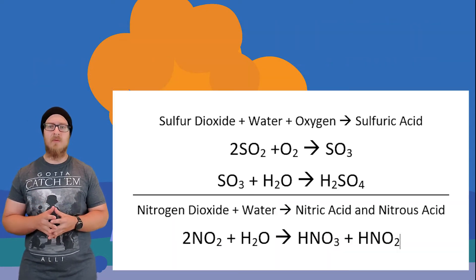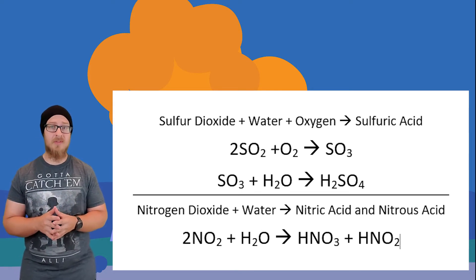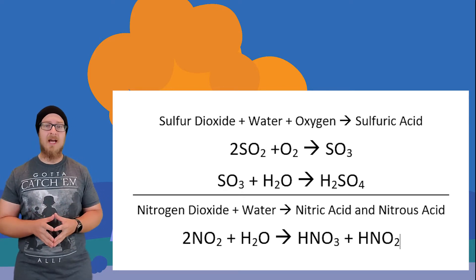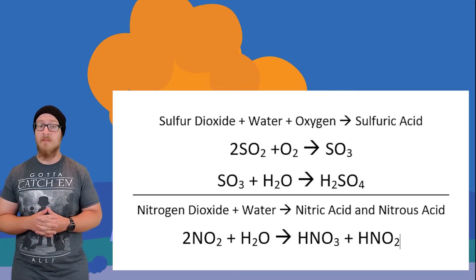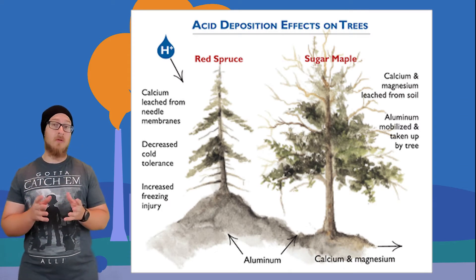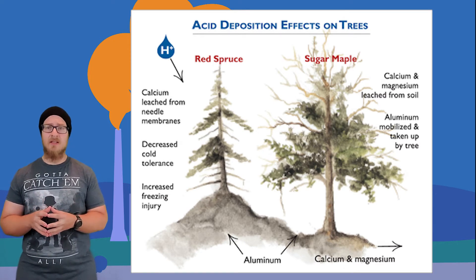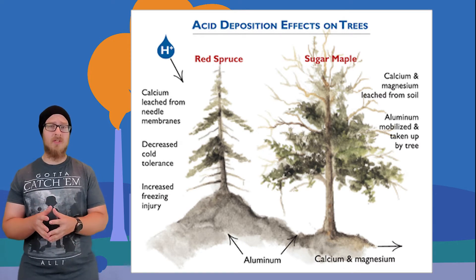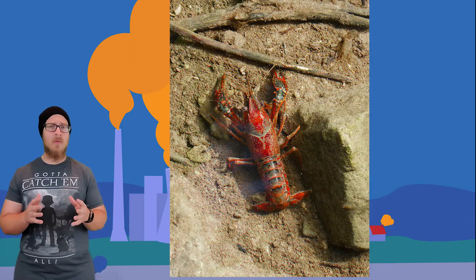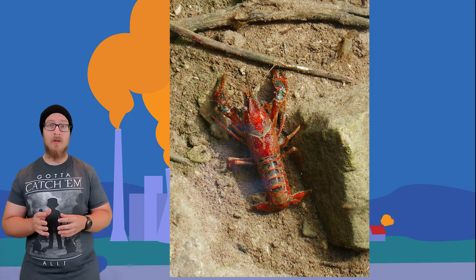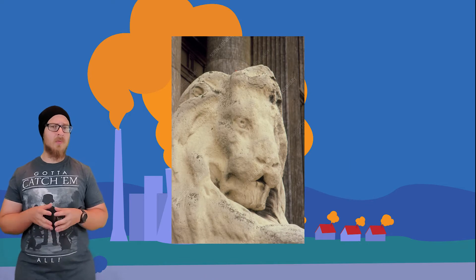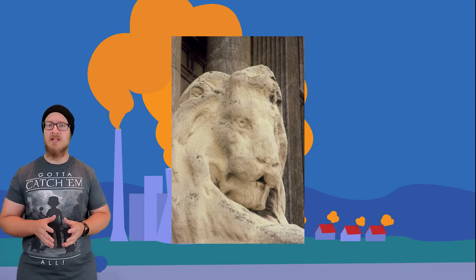Sulfur dioxide, when it combines with water in the atmosphere, results in sulfuric acid. Nitrogen dioxide, when it combines with water in the atmosphere, produces nitric acid. When these substances fall back down to earth, we call it acid deposition or acid rain. Acid deposition can lead to the acidification of soils and bodies of water, which limits how well plants can absorb nutrients from soils and how easy it is for crustaceans — organisms with shells — to build their shells. It can also erode man-made structures like buildings and statues.